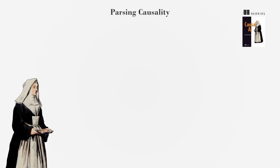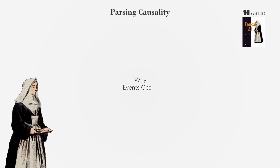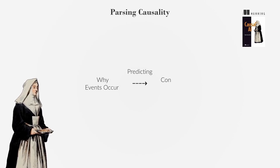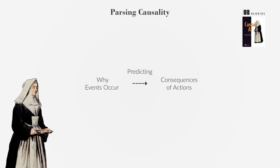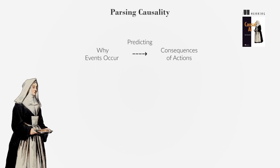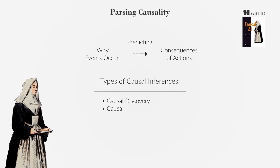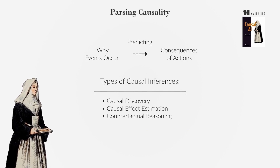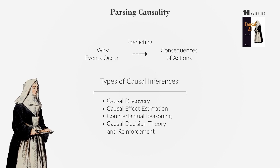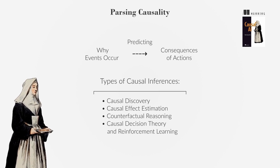Causality involves understanding why events occur and predicting the consequences of actions. We explore the types of causal inferences we can make, such as causal discovery, causal effect estimation, counterfactual reasoning, and causal decision theory and reinforcement learning.